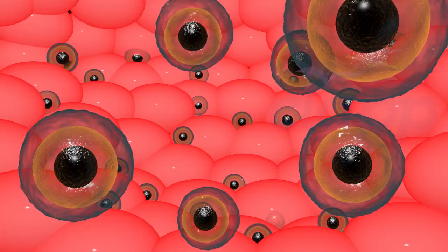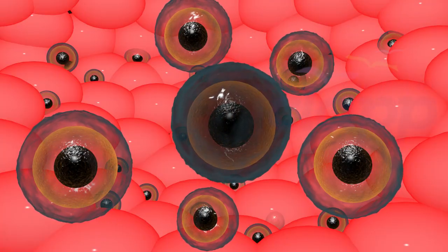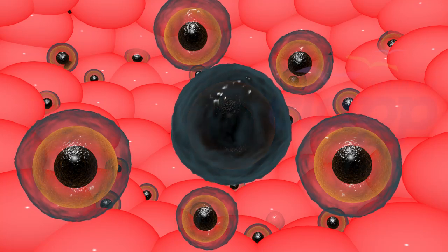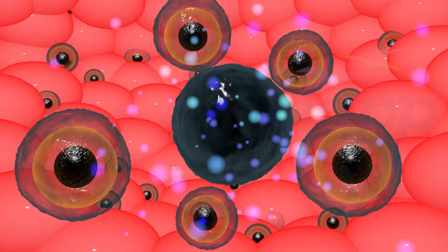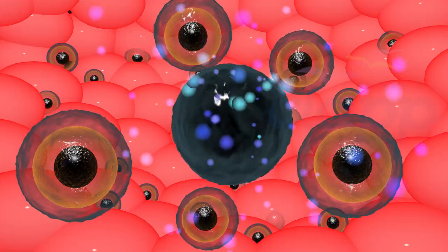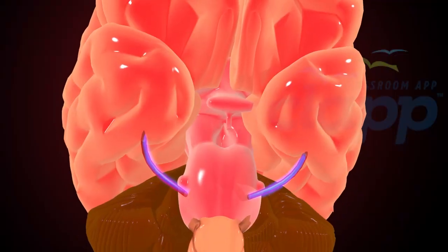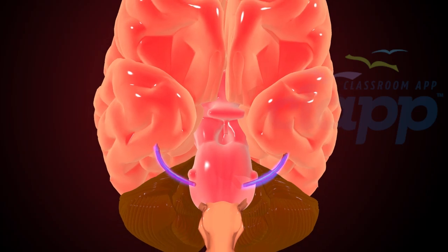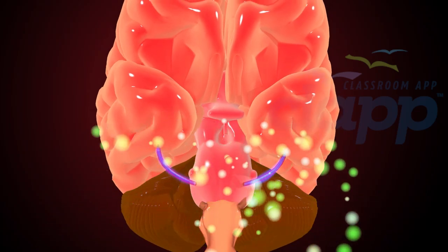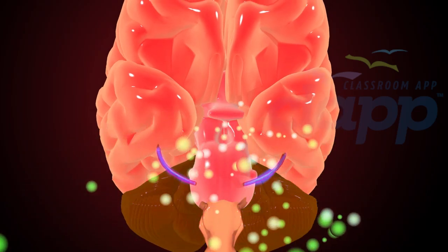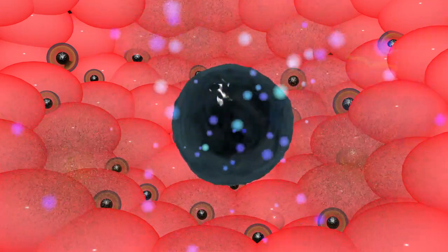After the egg is released, the follicle seals over and is called the corpus luteum. The corpus luteum starts producing progesterone. This progesterone has a negative feedback effect on GnRH to reduce it and keep its frequency in a normal range. Other follicles disintegrate in the next few days.